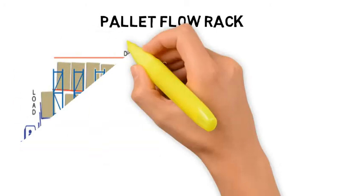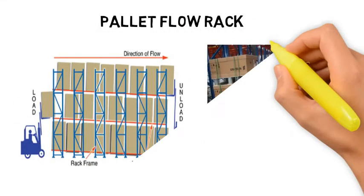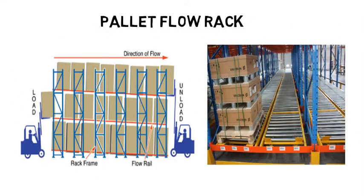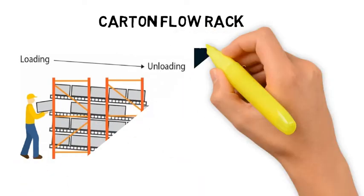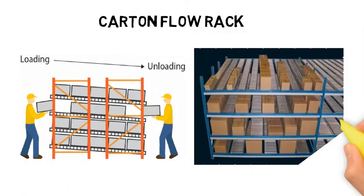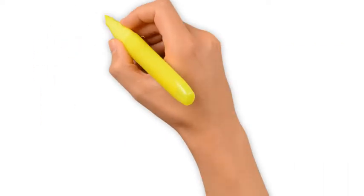If accessed from both sides, a pallet flow rack can be used for homogeneous products stored in large quantities following FIFO requirements. A carton flow rack can be designed along the same principles — cartons set on rolling tracks can be pushed back by new cartons loaded into the racking. Gravity keeps the most recently loaded one right in front.